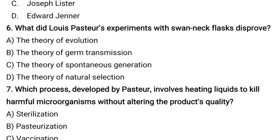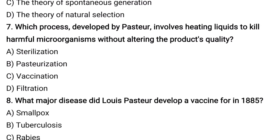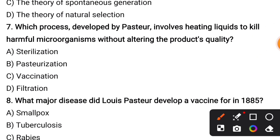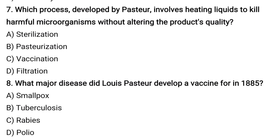Which process developed by Pasteur involves heating liquids to kill harmful microorganisms without altering the product's quality? Options are sterilization, pasteurization, vaccination, filtration. The answer is pasteurization — heating liquids up to a certain temperature to kill harmful microorganisms. That process is pasteurization, invented by Louis Pasteur.